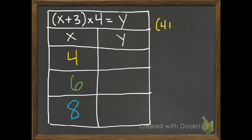So I'm going to erase that and write my first one. So I put in 4 for x. 4 plus 3 times 4. We do the parentheses first. 4 plus 3 is 7. 7 times 4 is 28. So when x is 4, y is 28.